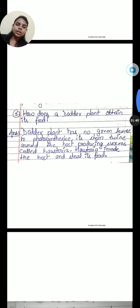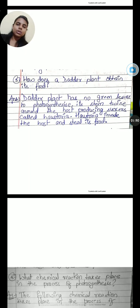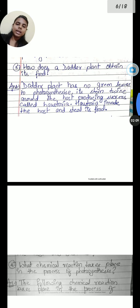Third question, how does a cuscuta plant obtain its food? As we know, cuscuta plant is a parasitic plant. The cuscuta plant has no green leaves to photosynthesize. Its stem twines around the host producing suckers called haustoria. Haustoria invade the host and steal its food.